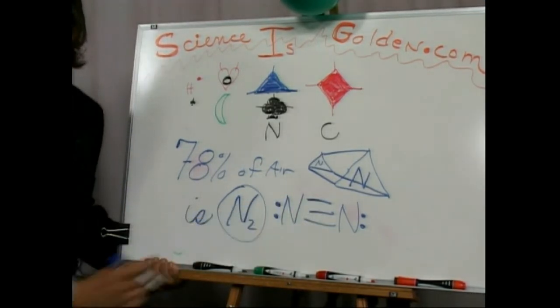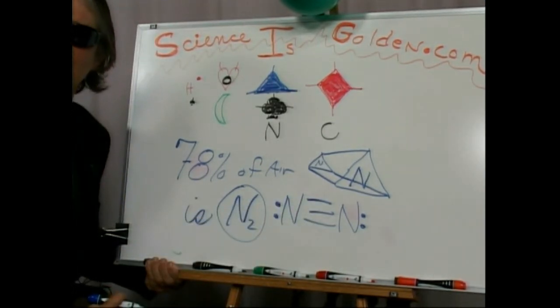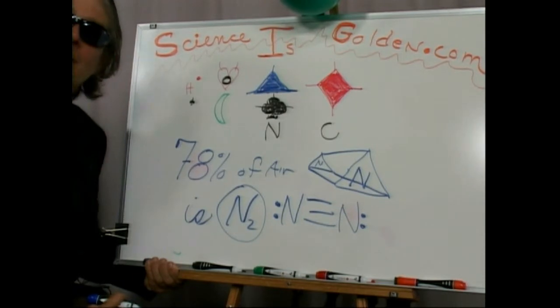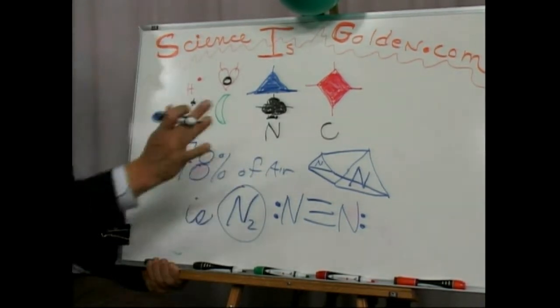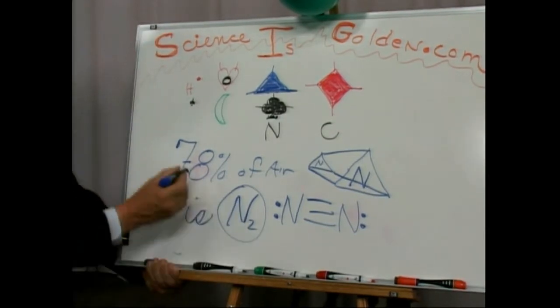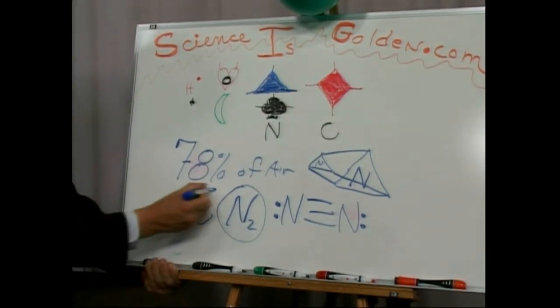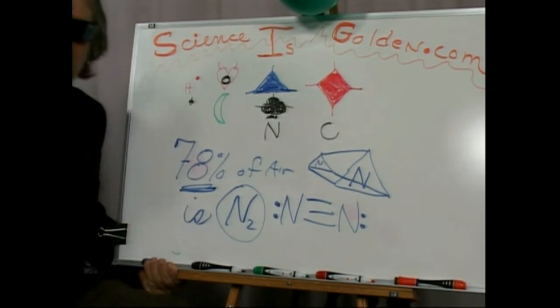So with this triple bond, we need nitrogen in our amino acids. How do we get it? There's a little bit of NO that's created when lightning strikes. Because remember, you've got 78% of the air here that we're breathing. It's almost totally inert.